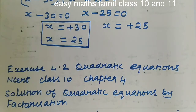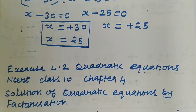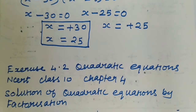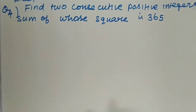Hello viewers, our today's topic is quadratic equations — solution of quadratic equations by factorization. Exercise 4.2, question number 4: Find the two consecutive positive integers the sum of whose squares is 365.